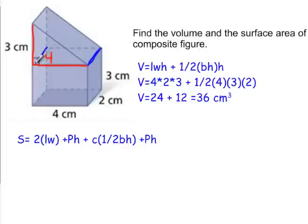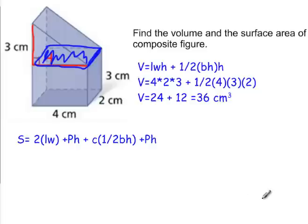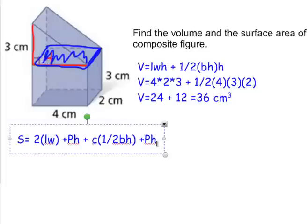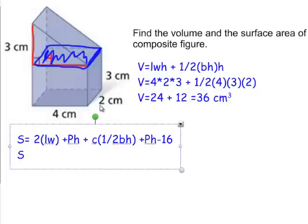There's something important to consider: the top of the rectangular prism is also a side of the triangular prism — we're not adding that face twice. So from the total, we subtract that shared shape twice: once from the top of the rectangular prism and once from the side of the triangular prism. That shape is 4 by 2, so its area is 8, and we subtract 16 total.